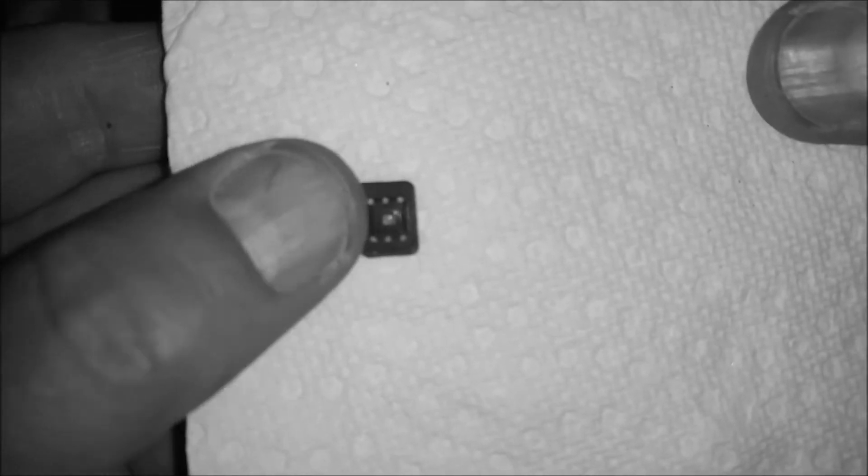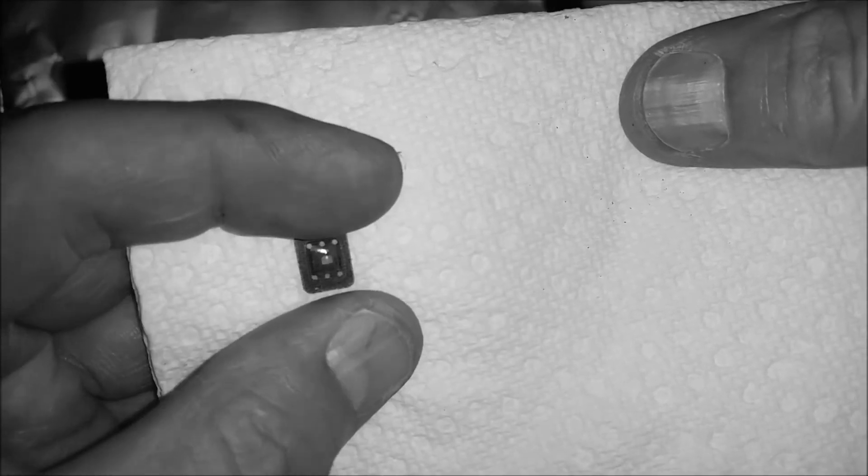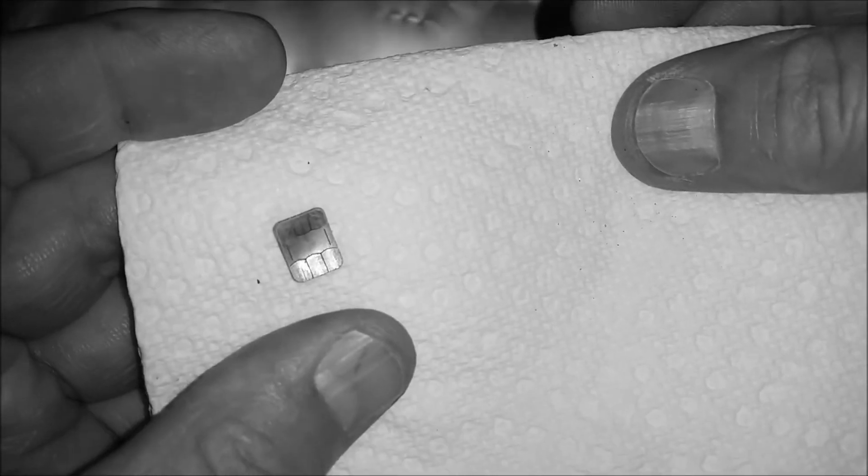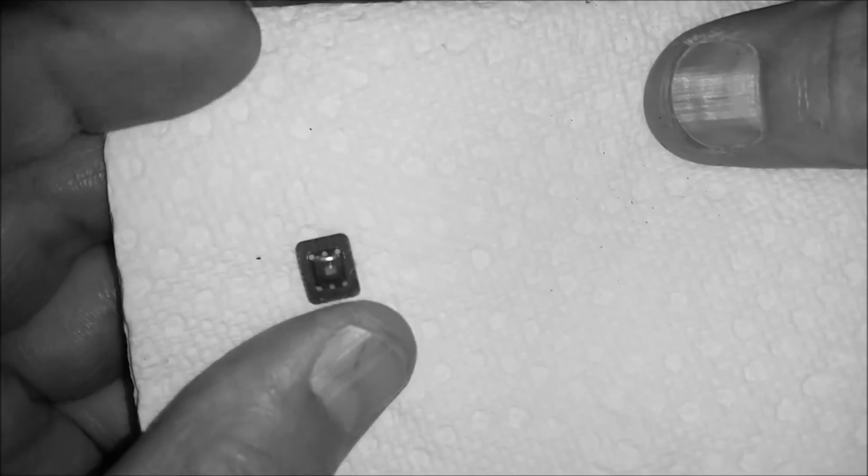It's right in the center there—that's the actual chip—and then the contacts are on the outside here, these six dots which are attached to this side. Pretty amazing actually. I always wondered what these look like.